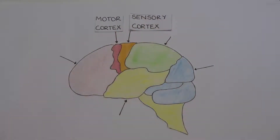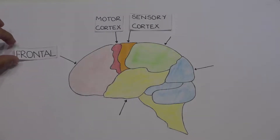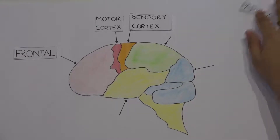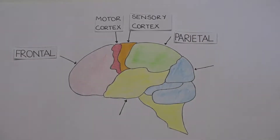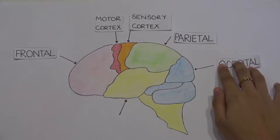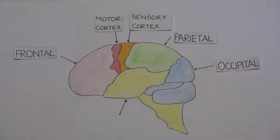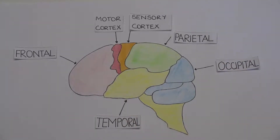Looking at the cerebrum, we can see that it is made of six different lobes. These are the frontal, parietal, occipital, temporal, central and limbic lobes.